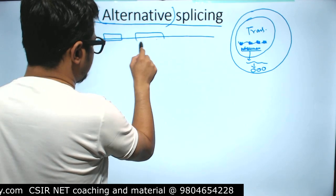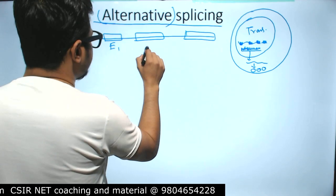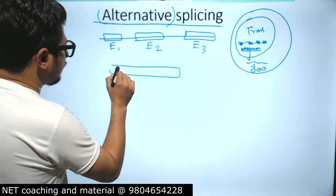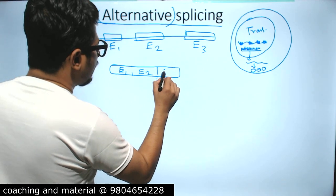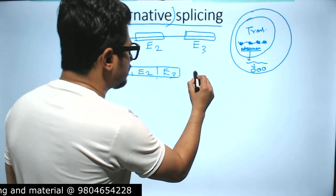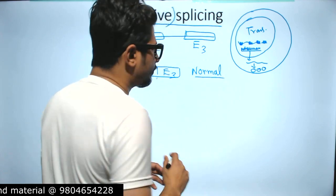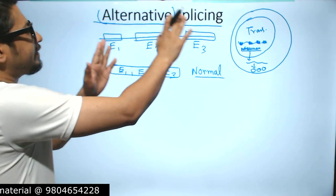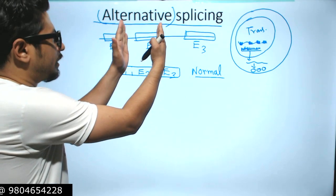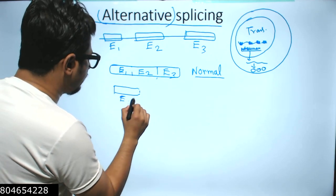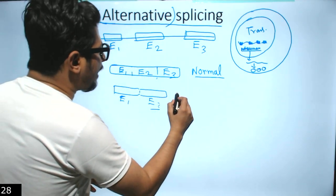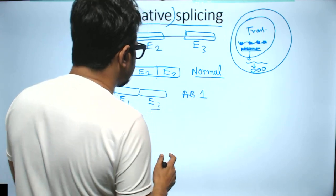For example, imagine exon 1, exon 2, and exon 3. Normally, splicing produces RNA with all three exons joined together. But with alternative splicing, we can skip an exon — for example, skipping exon 2 results in exon 1 attached directly to exon 3. This is known as exon skipping and is one result of alternative splicing.